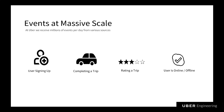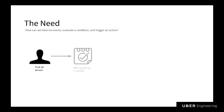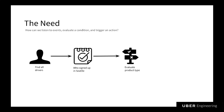However, we lacked the ability of a general-purpose if-this-then-that engine to listen to events, evaluate a condition, and trigger an action. For example, find all drivers who signed up in Seattle, and then based off of the product type, either send the UberX requirements or the UberBlack requirements. This may seem like a very simple workflow.